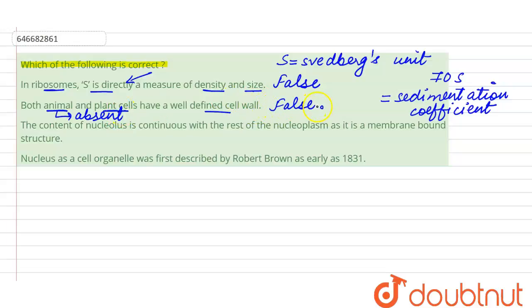The third statement is that the content of the nucleolus is continuous with the rest of the nucleoplasm as it is a membrane-bound organelle. Remember, the nucleolus is a non-membrane-bound organelle, so this becomes a false statement as well.